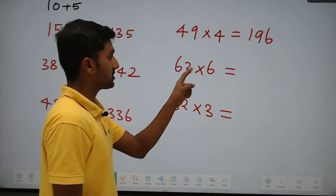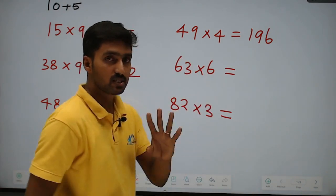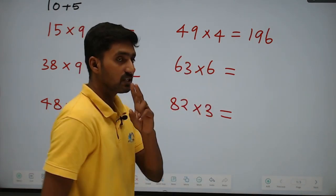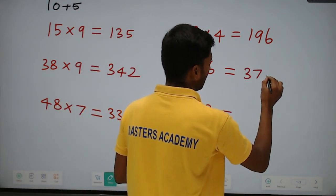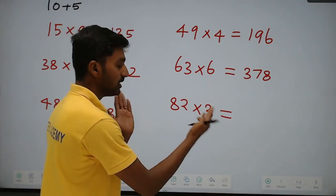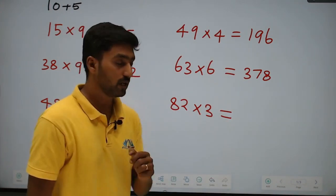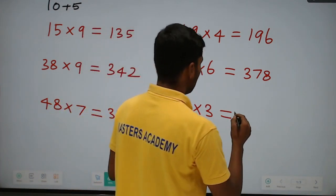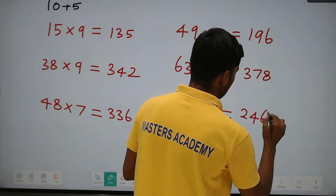Next, 63 into 6: split into 60 plus 3. 60 into 6 is 360. Plus 3 into 6 is 18. 360 plus 18 is 378. And 82 into 3: split into 80 plus 2. 80 into 3 is 240. Plus 2 into 3 is 6. 240 plus 6 is 246. It is very simple.